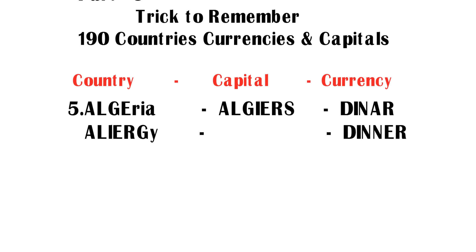If you observe the country name Algeria, the first five letters A-L-G-E — its pronunciation is similar to 'allergy.' So try to remember country Algeria as 'allergy.'